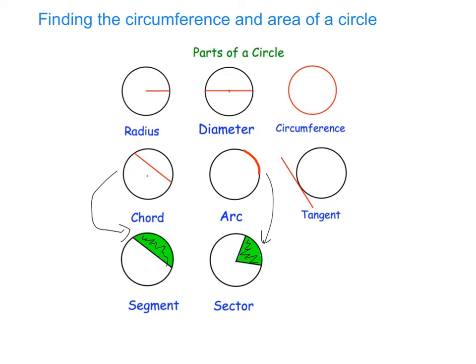Something important to know is the tangent of a circle. That's basically a line that runs on the side of the circle. It only touches it once, and it makes a 90 degree angle with the radius of your circle. So that's your parts of your circle.